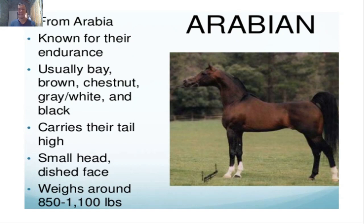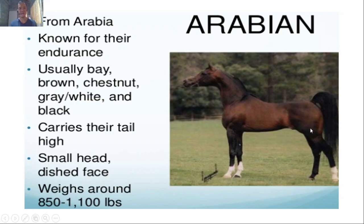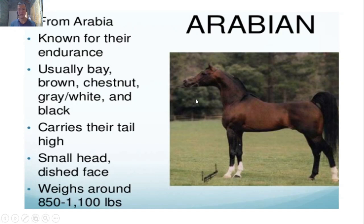The Arabian breed is one of the most expensive horse breeds. From Arabia, it is known for endurance. Colors include bay, brown, chestnut, gray, white, and black. Arabians carry their tail high — described as proud or maangas. They have a small head and a dished face, meaning somewhat wide and concave. Weight is around 800 to 1,100 pounds.